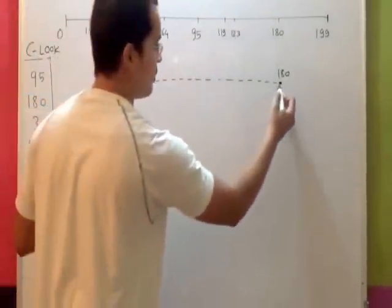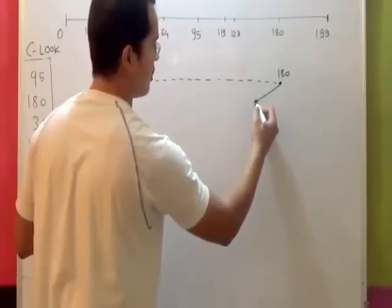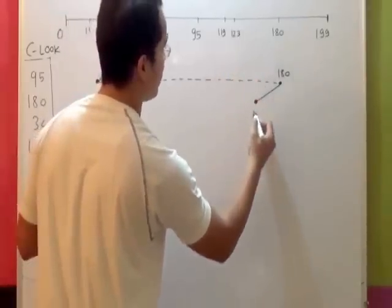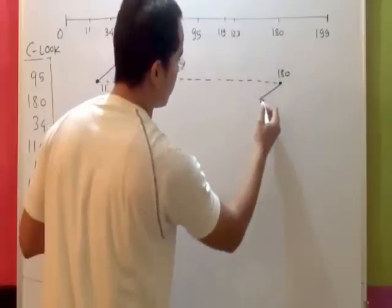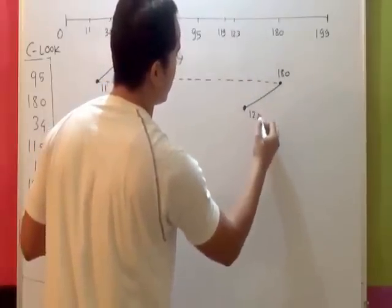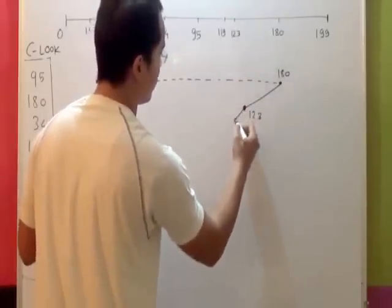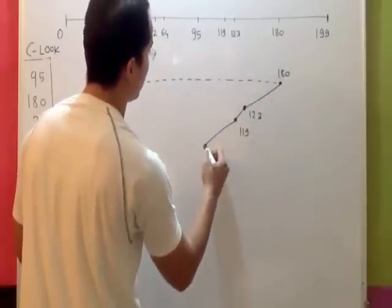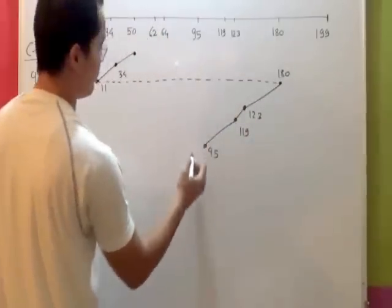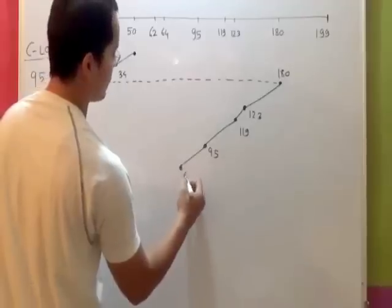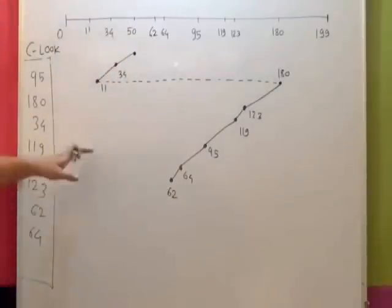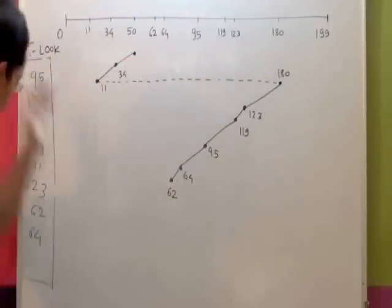From 180 we need to just go back to the other tracks which we did not access. So what was that? 123 first. Then from 123, 119. From 119, 95. From 95, 64. From 64, 62. That's it. I have accessed all the tracks in the queue.